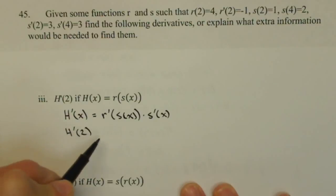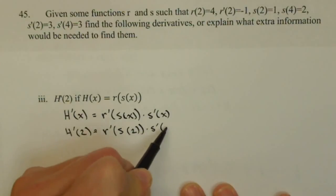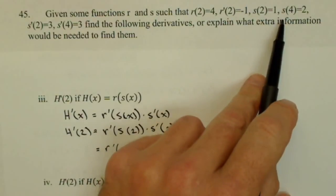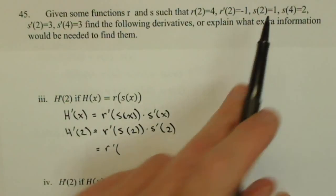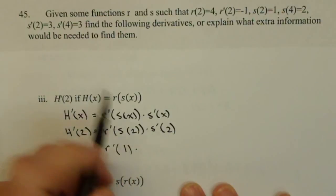Therefore, H prime of two is r prime of s of two times s prime of two. Now, let's see what we have values for: r prime, s of two, according to our table up here, s of two is equal to one, and s prime of two is equal to three.